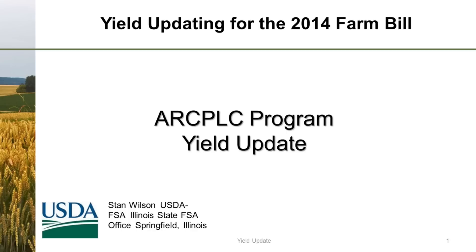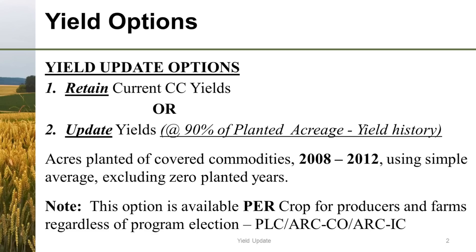There are two yield update options, and only two. The first is to retain the farm's current CC yields — notice I'm not saying direct yields; it's the counter-cyclical yields. The other option is to update the farm's CC yields using yield data from the years 2008 to 2012, taking a simple average, and we do exclude any zero-planted years. The yield update option is available for all farms, regardless of program participation or election, whether the farm is ultimately enrolled in PLC — price loss coverage — or ARC — agriculture risk coverage.